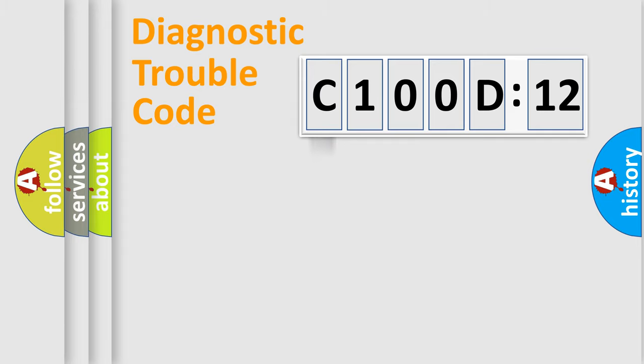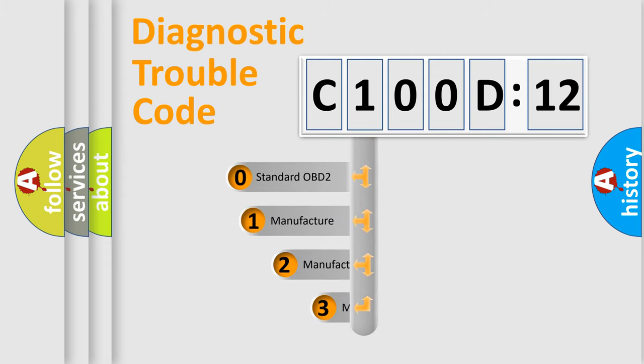Powertrain, body, chassis, network. This distribution is defined in the first character code.